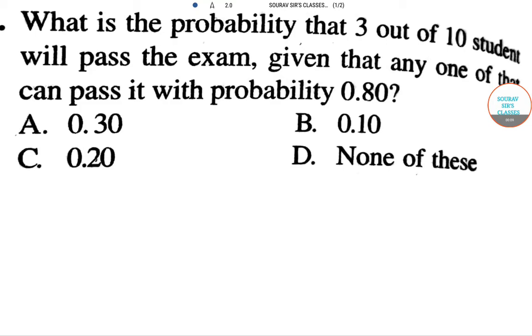Let's read the sum. What is the probability that 3 out of 10 students will pass the exam given that any of them can pass it with probability 0.80? Now, how to do this kind of sum? First of all,